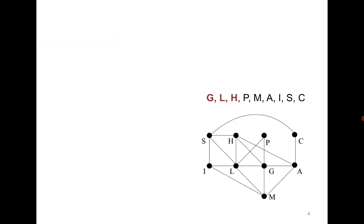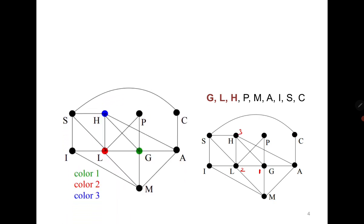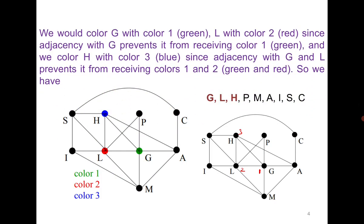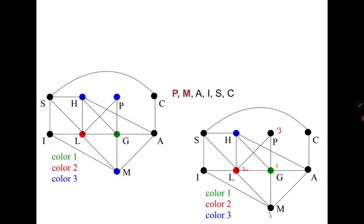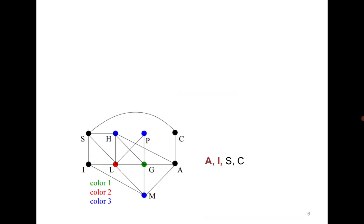We start with vertex g and give it color 1. Then l is adjacent to g, so color 2. And h is adjacent to both of them, so we give color 3 here. Moving further, the next vertices are p and m. p is adjacent to colors 1 and 2 but not adjacent to h, therefore color 3 can be used for p, and similarly color 3 can be used for m.